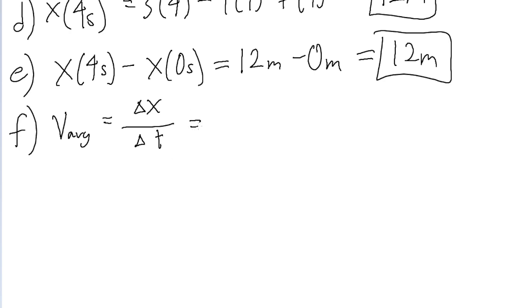In this case, we're specifically asked about the average velocity from 2 seconds to 4 seconds. So our delta x in the numerator is x at 4 seconds minus x at 2 seconds, and we're dividing this by the change in the time interval, which is 4 seconds minus 2 seconds.